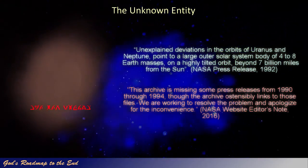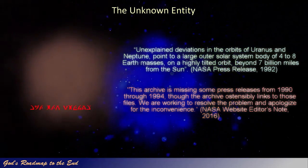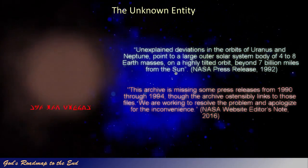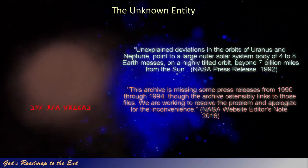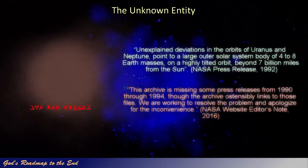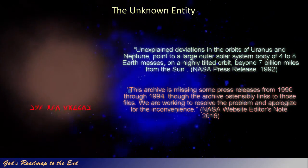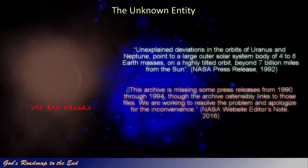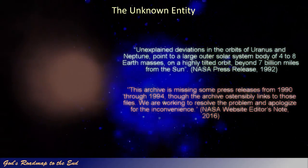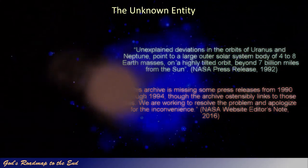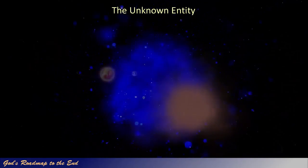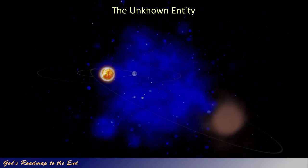The lack of information about this object in the mainstream media is certainly telling us a thing or two. It is clear that NASA has removed these articles intentionally to keep this information from the public. But what would be their motive for hiding this information, given that this was once public knowledge? What do they know that they do not want the public to know? Is this maybe because of this object's current trajectory, and what it could imply for those living on earth in the years to come?